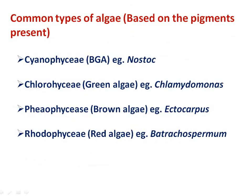Based on color, algae are of different types. The first is Cyanophyceae: the color of this algae is blue-green due to the presence of a pigment called phycocyanin, which is why they are called blue-green algae. Examples of blue-green algae are Nostoc and Anabaena.